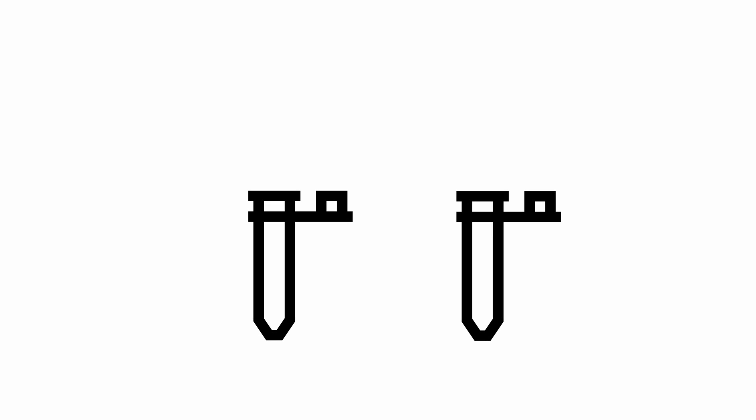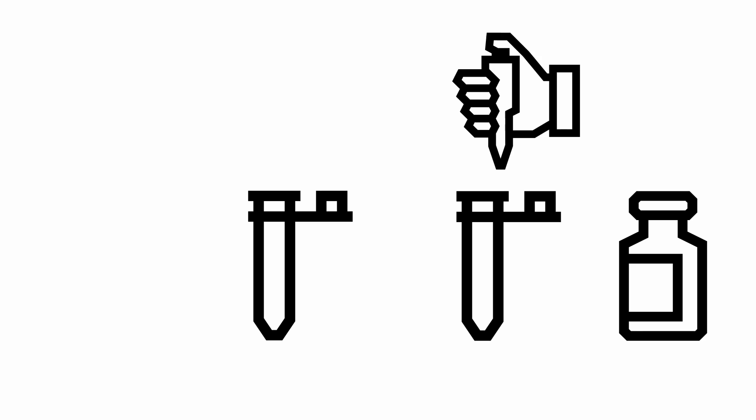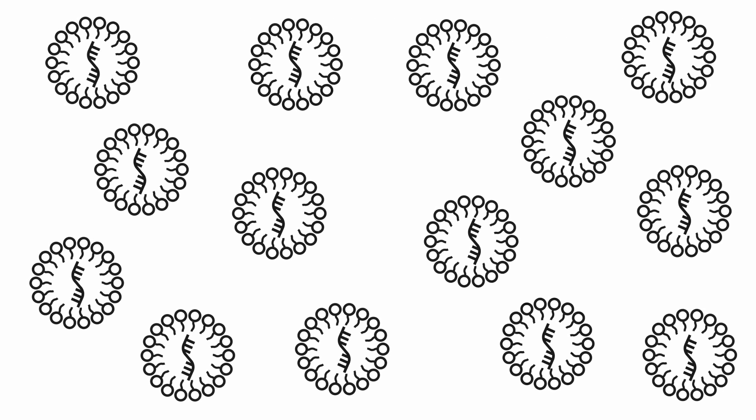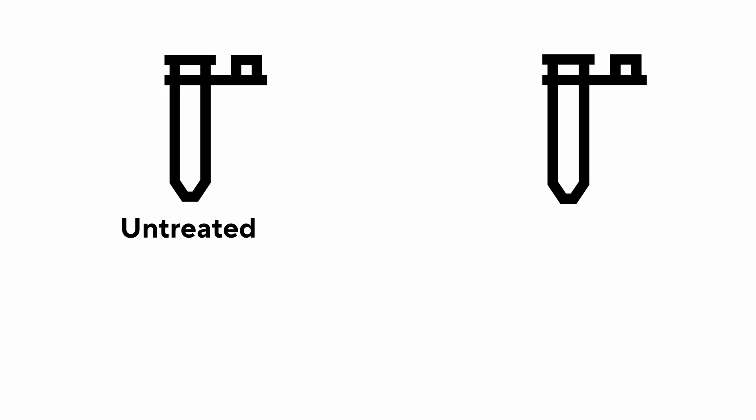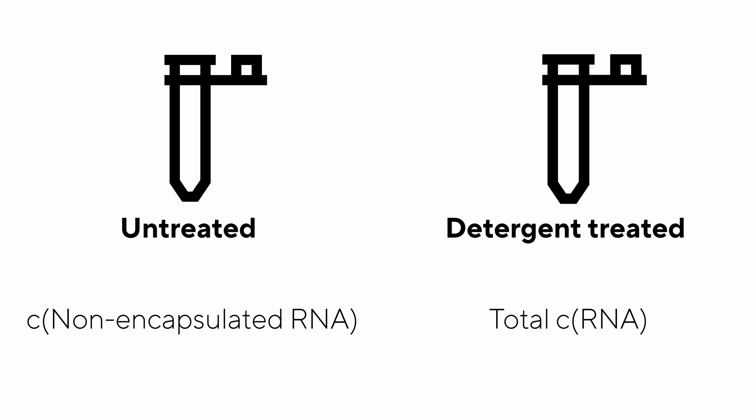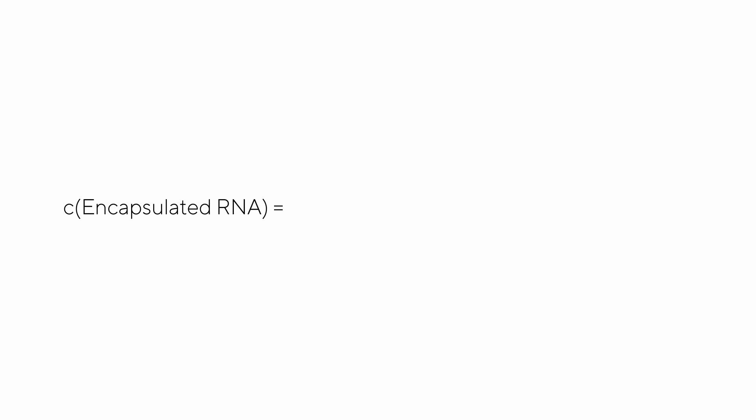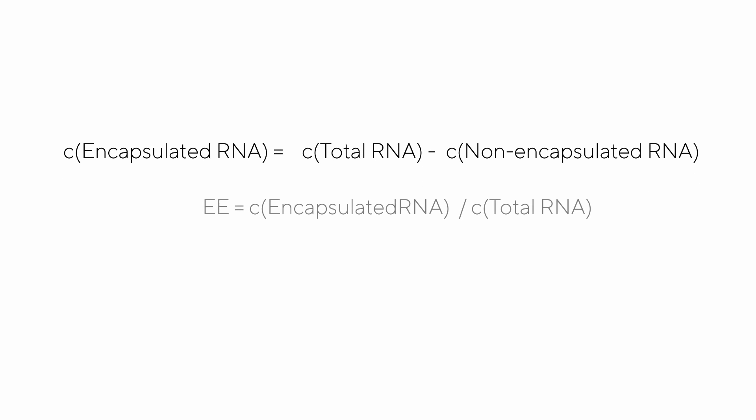To determine the encapsulation efficiency, ribogreen reagent is added to two aliquots of the LMP sample. One of these aliquots is pretreated with a buffer containing a detergent to disrupt the LMP and release the encapsulated RNA. The fluorescent signal of the untreated aliquot is used to calculate the concentration of non-encapsulated RNA, while the signal of the detergent-treated aliquot is used to calculate the total RNA concentration. The encapsulated RNA concentration is then calculated by subtracting the non-encapsulated RNA concentration from the total RNA concentration. The encapsulation efficiency is then calculated based on these values.